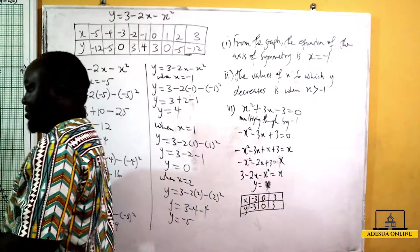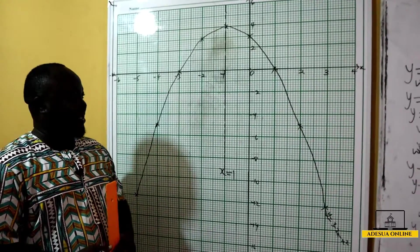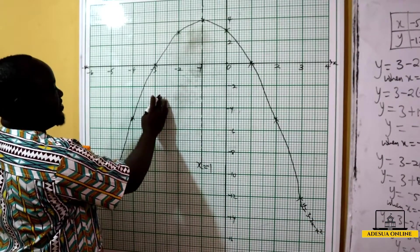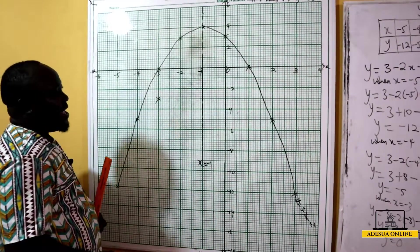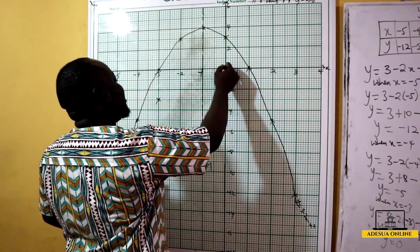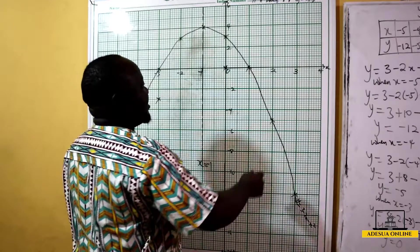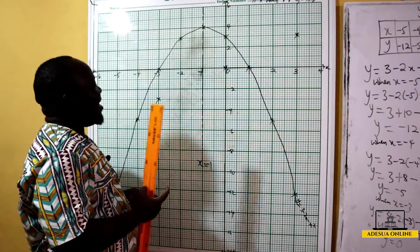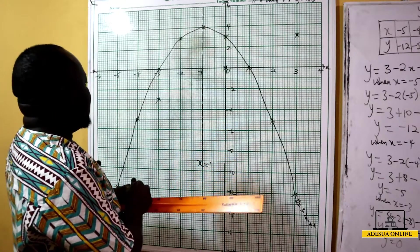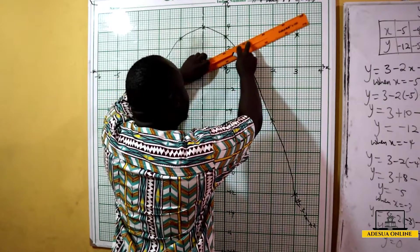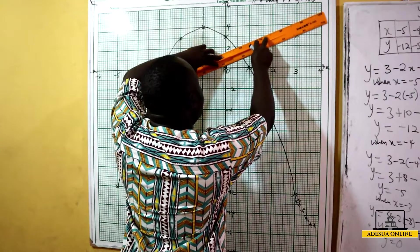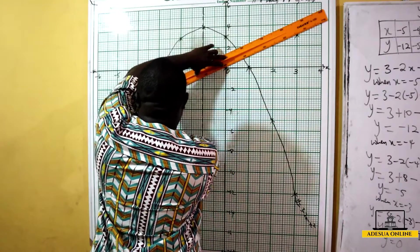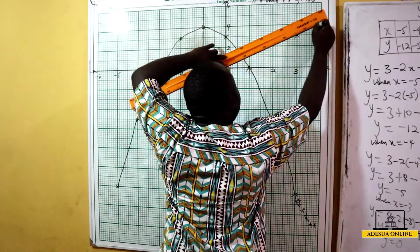On the graph: plot negative 3, negative 3; plot 0, 0 at the origin; plot 3, 3. Pick up the ruler and draw the straight line through all three points. The line passes through the origin. This is the line y equals x.